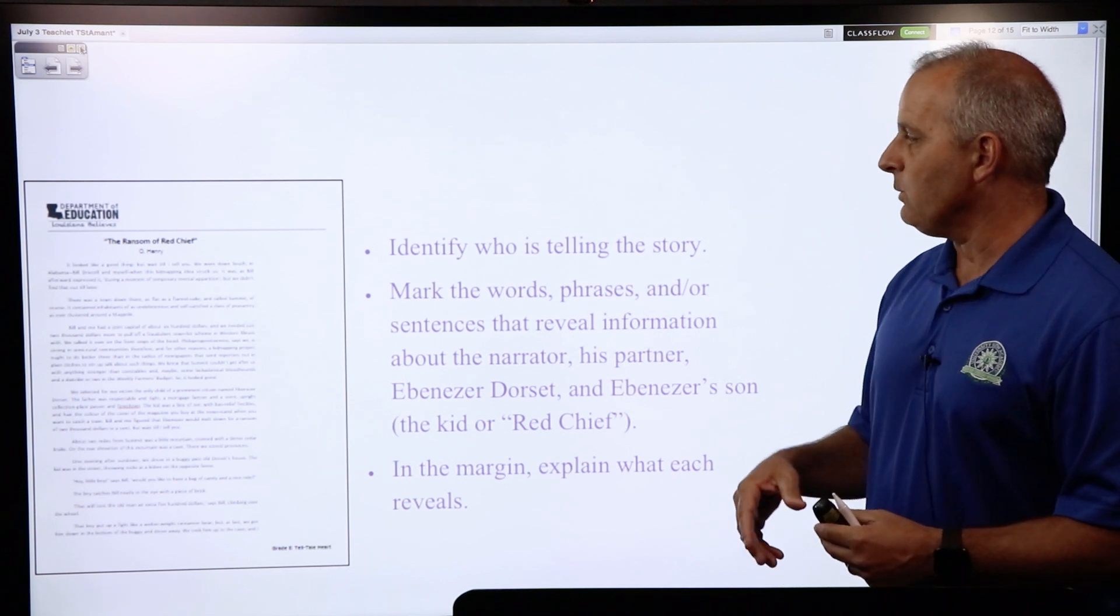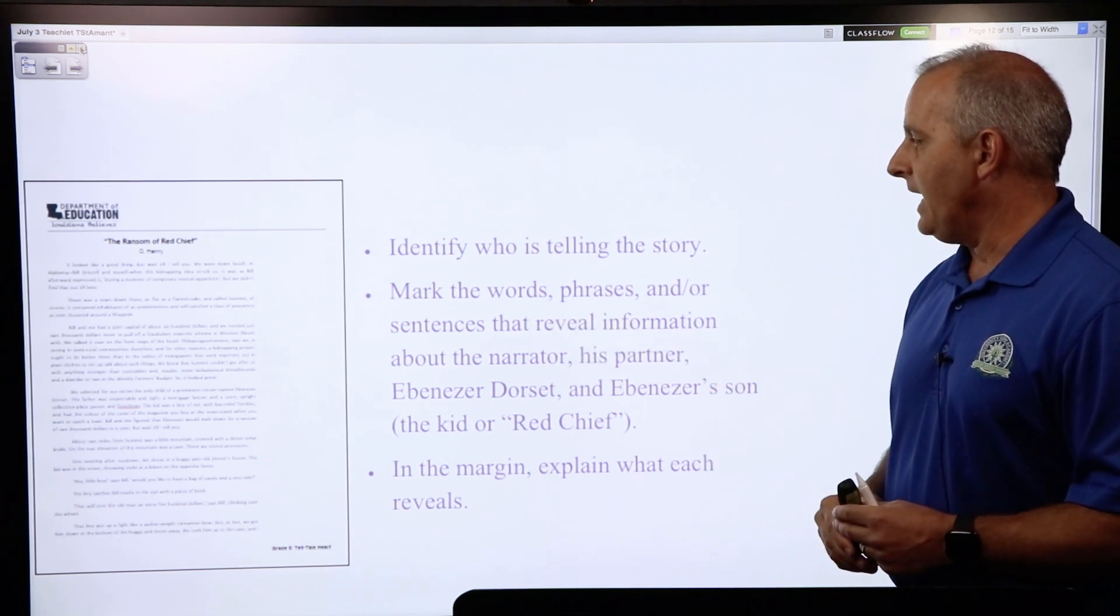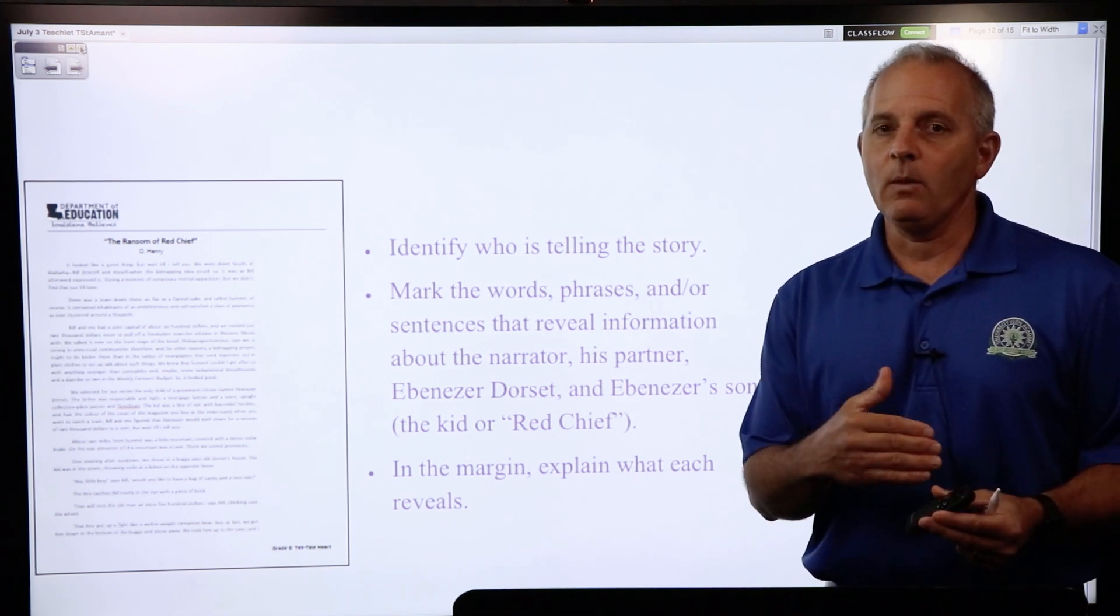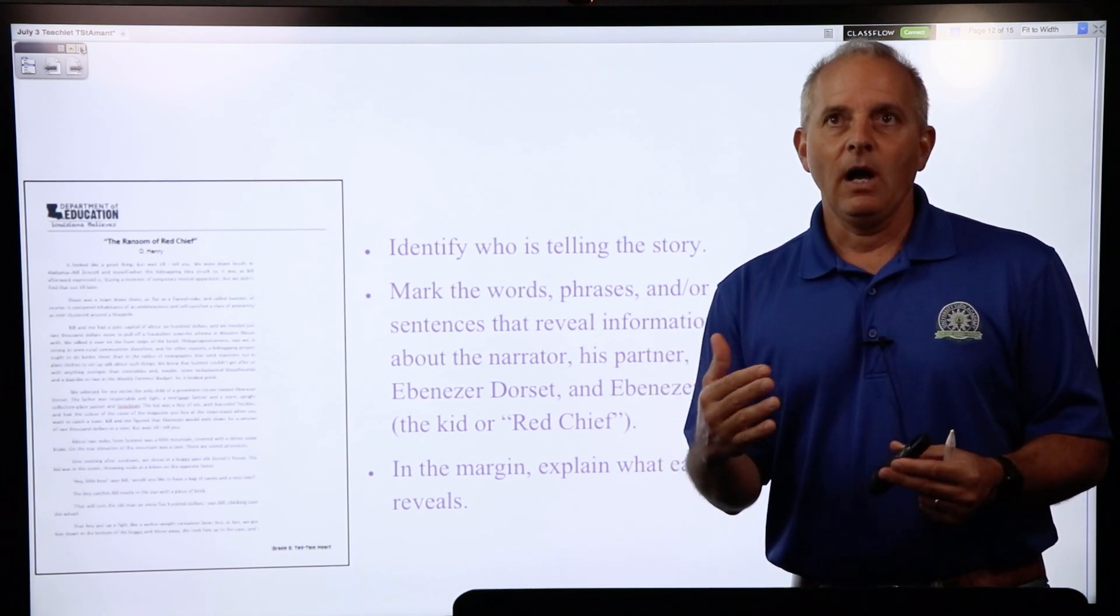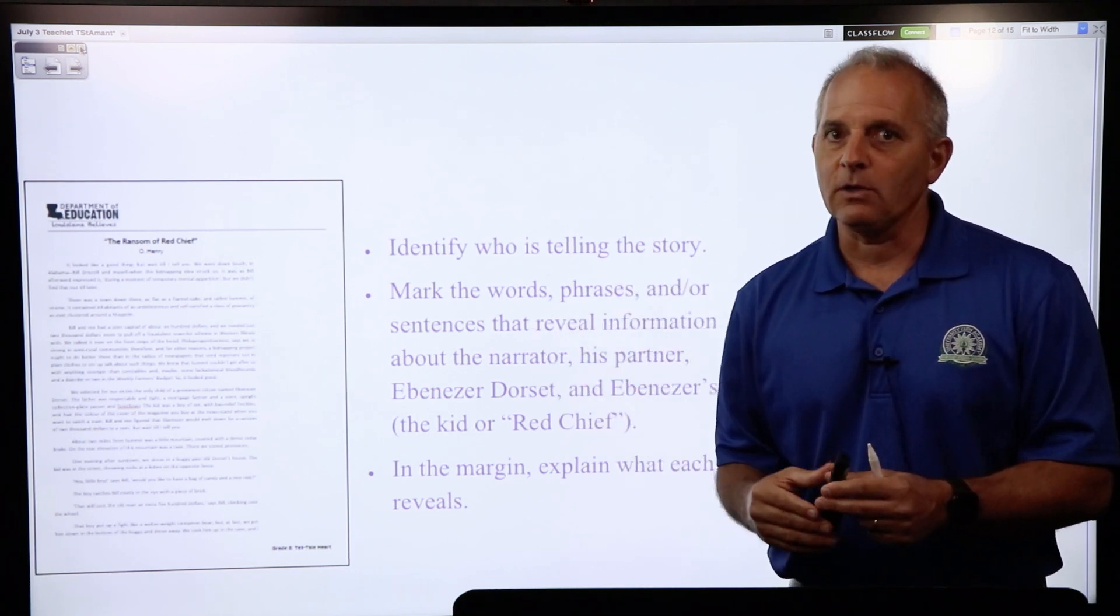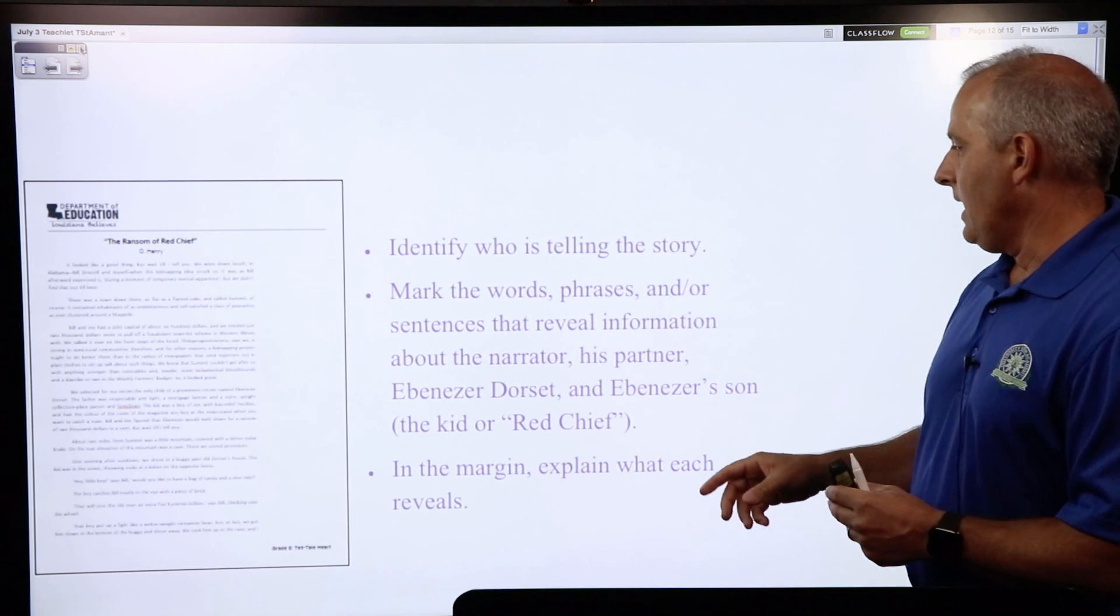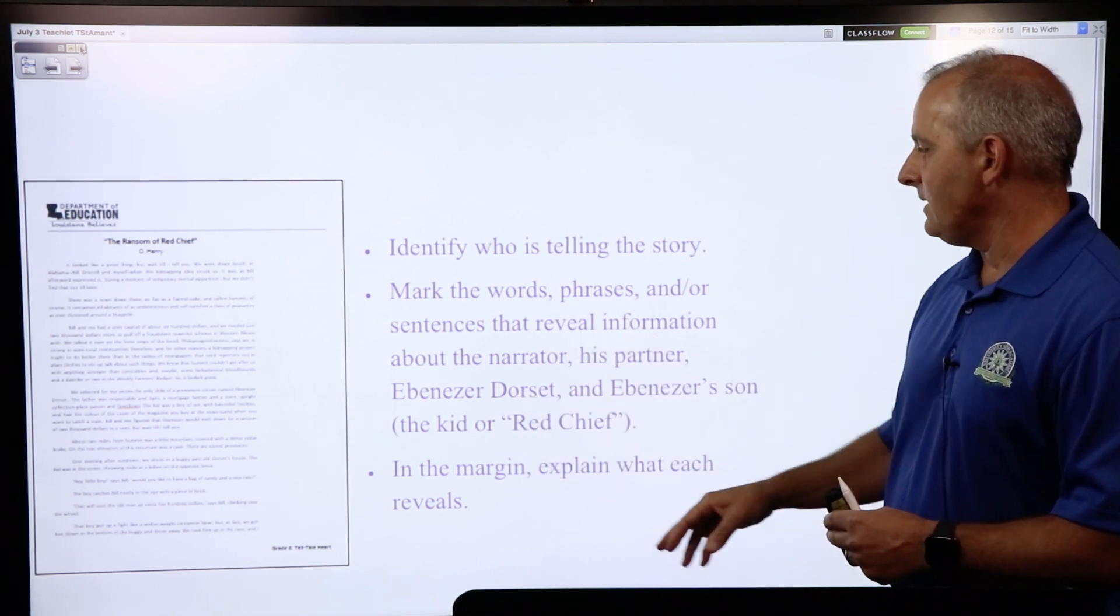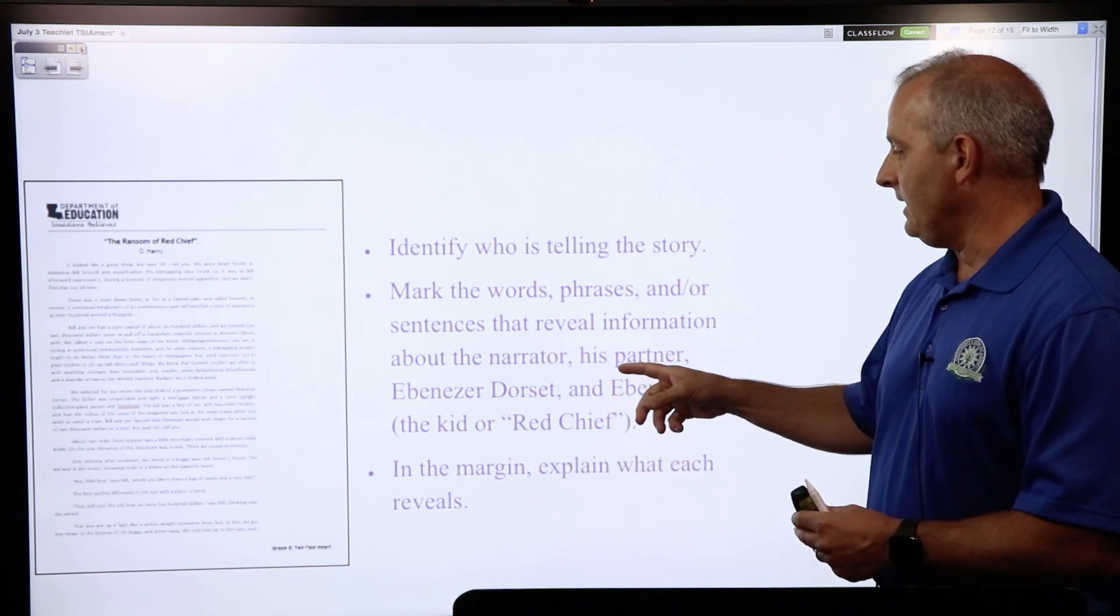You're going to mark the words, phrases, and sentences that reveal information about the narrator. In other words, about their character—what type of person is the narrator, some descriptive adjectives that describe their character. We're going to be doing that as we go through this story by O. Henry, and some of the names of those characters are Ebenezer Dorsett, the kid or Red Chief, and the partner.